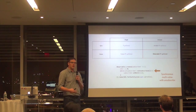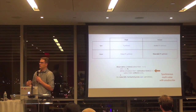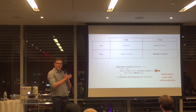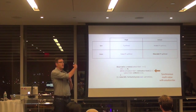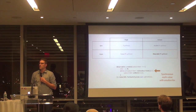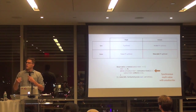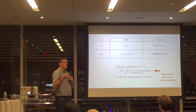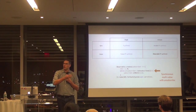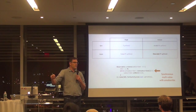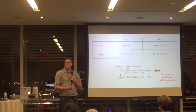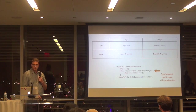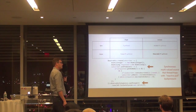Everything in observable supports unsubscription — it can be cancelled — so it has bi-directional communication: data flows down but you can also unsubscribe upstream. This is how all resource management is handled. When a sequence is unsubscribed, any resources it created are cleaned up. The contract is that either the subscriber can cancel, or when a terminal event — onError or onComplete — occurs, the unsubscribe event propagates to the entire sequence back up.